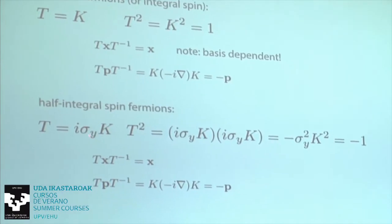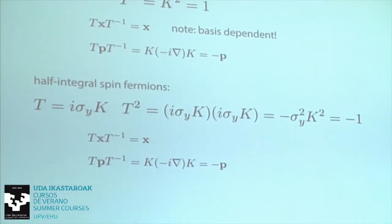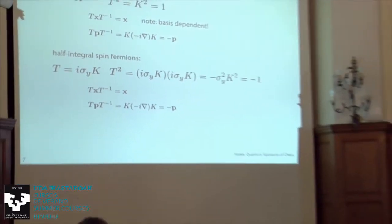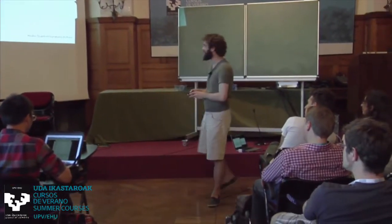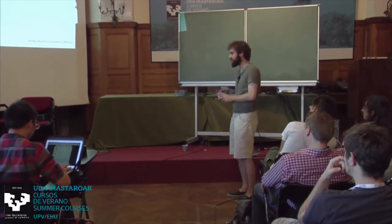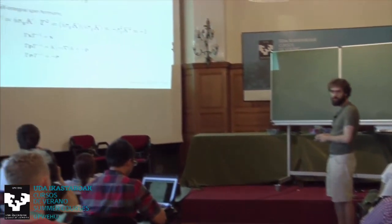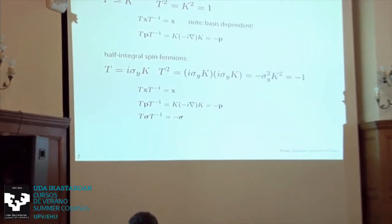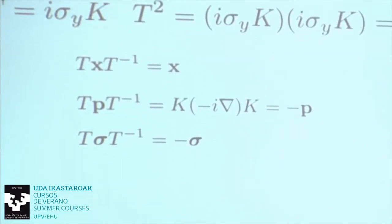x and p don't care about spin, so they do the same as before. What happens to spin under time reversal? It changes sign, because it's an angular momentum — if x goes to x and p goes to minus p, then x cross p goes to minus x cross minus p, which is minus the angular momentum. You can check that this matrix does the trick: σ_y is imaginary so it flips the sign, and then σ_y flips σ_x and σ_z.